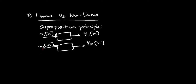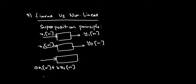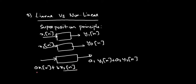Now instead of applying x1 of n and x2 of n separately, apply a combined signal: a into x1 of n plus b into x2 of n. If the result is a times y1 of n plus b times y2 of n, then we say this system is a linear system. This is the superposition principle.